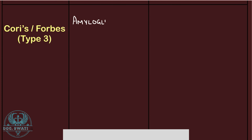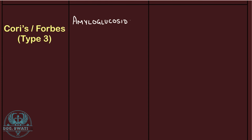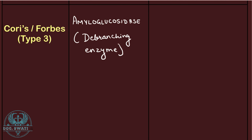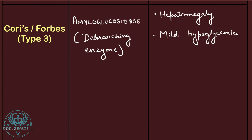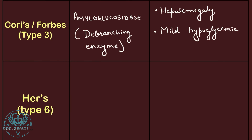Next is Cori's disease, also known as Forbes disease. This is Type 3 glycogen storage disease and is caused due to the deficiency of amyloglucosidase, also known as the debranching enzyme. The clinical features of Cori's disease include hepatomegaly and mild hypoglycemia.